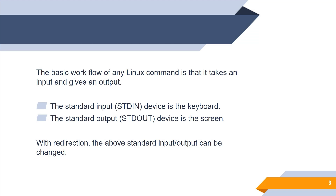The basic workflow of any Linux command is that it takes an input and gives an output. For example, if you want to list files in a directory you can use the LS command — that is the input, and the output is the list of files shown on the screen. The standard input device is most often the keyboard, or sometimes barcode readers or digital pens. The standard output is the display screen or monitor.